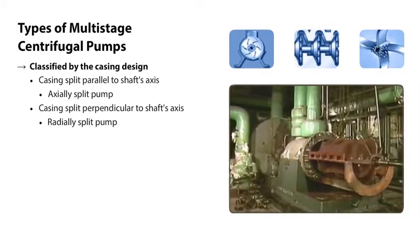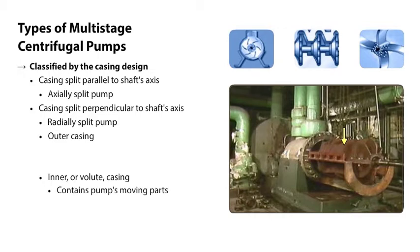A radially split centrifugal pump has an outer casing and an inner casing, which we've pulled out so that you can see it better. This inner casing is often called the volute casing. The volute casing contains the pump's moving parts.